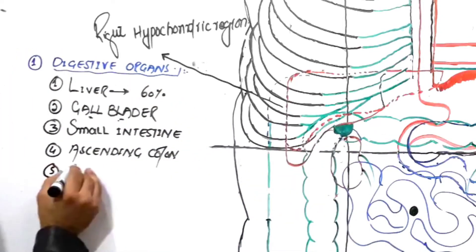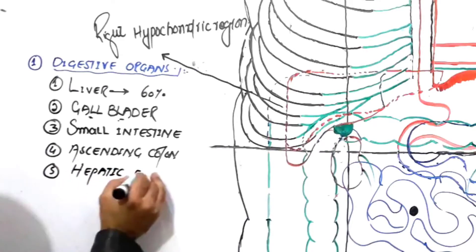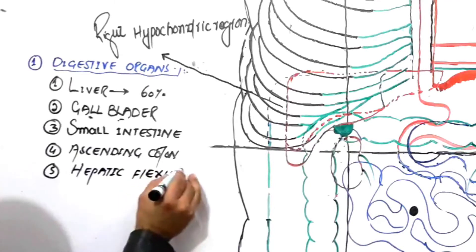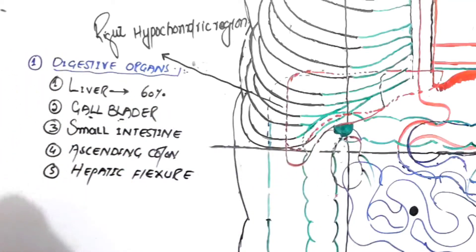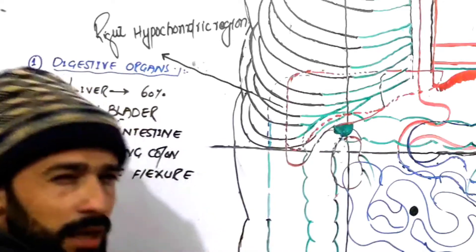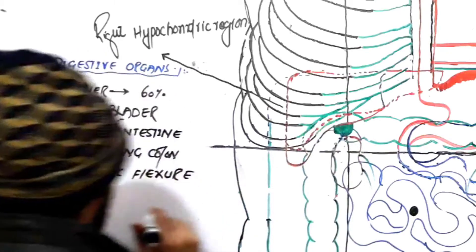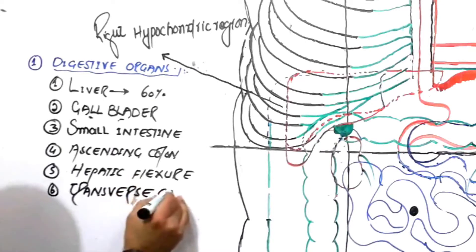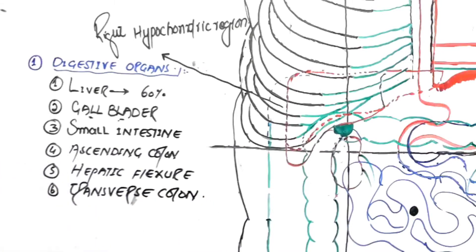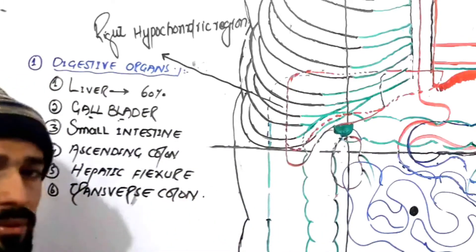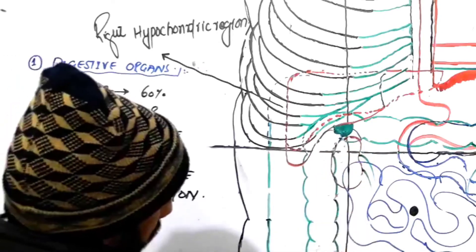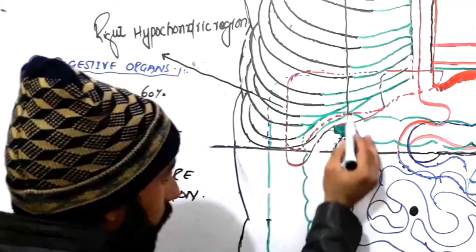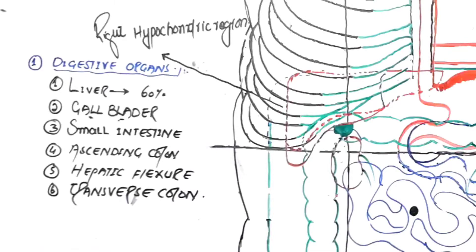The fifth structure is the hepatic flexure, also called the right colic flexure, which is found in the right hypochondric region. The sixth structure is the transverse colon — the first part of the transverse colon is also present there. So these are the digestive organs present in the right hypochondric region: liver, gallbladder, parts of the small intestine, part of the ascending colon, hepatic flexure, and part of the transverse colon.